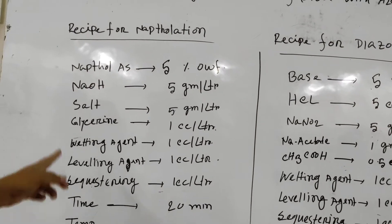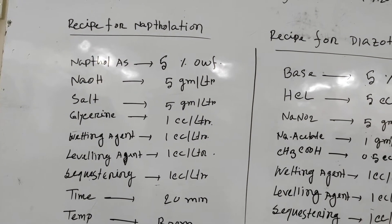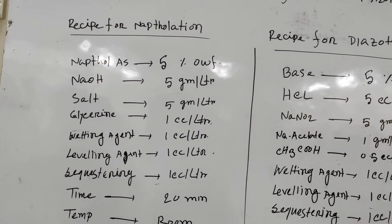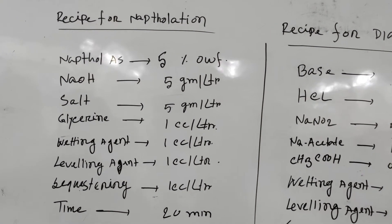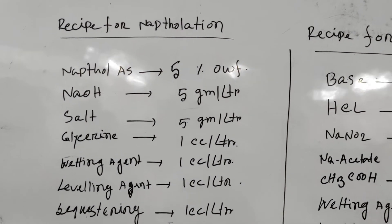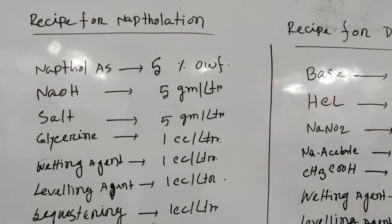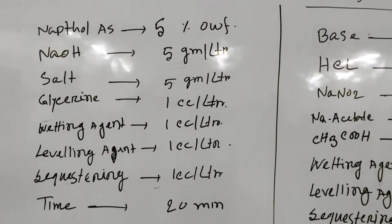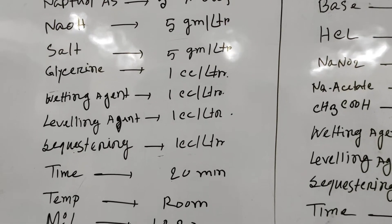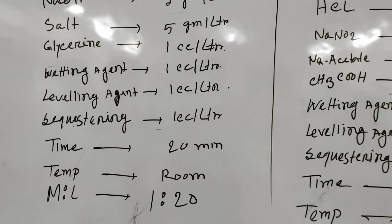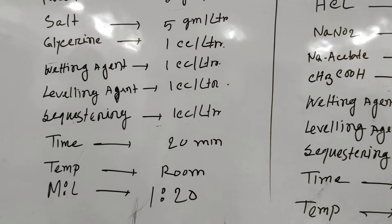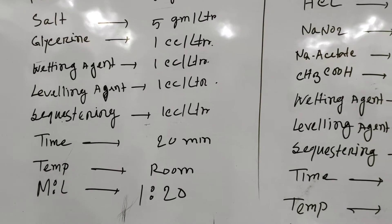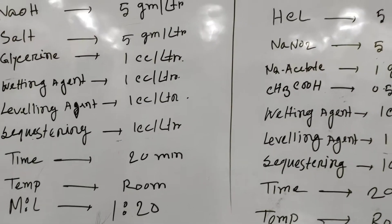The recipe for naphthalation consists of naphthalase, sodium hydroxide, salt, glycine, wetting agent, levelling agent, and sequestering agent. The time is 20 minutes, and the temperature is room temperature.